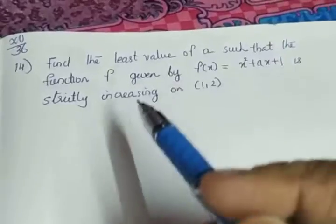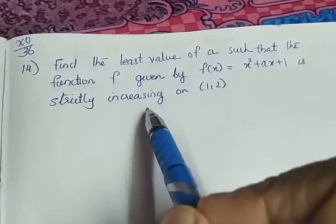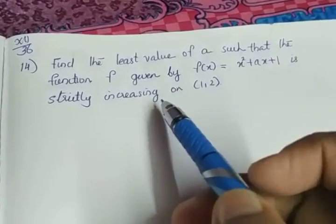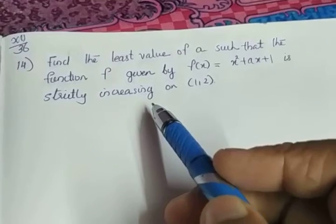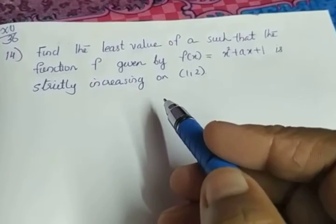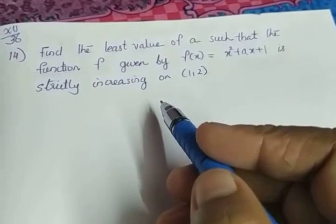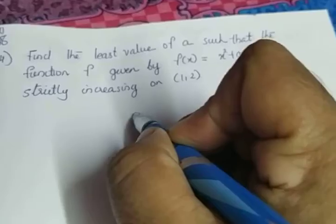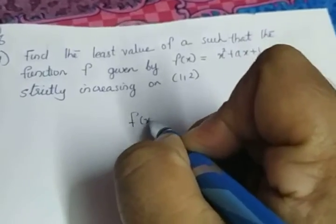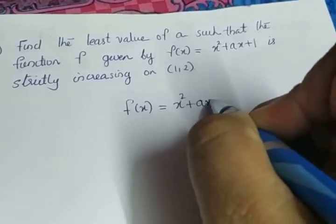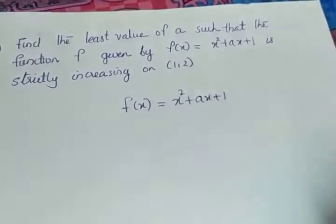In the question, there is the word 'strictly increasing'. Whenever the word strictly increasing is there, what we will do? We will find the derivative and equate it to zero — the usual procedure. So, here also take f(x) equal to x² + ax + 1.